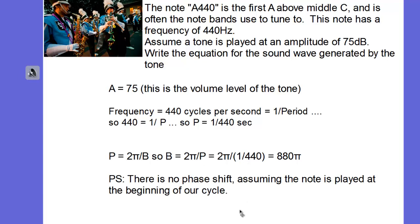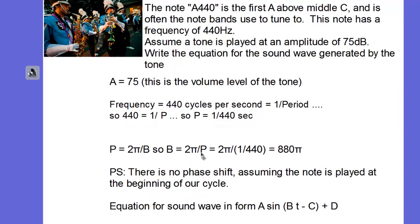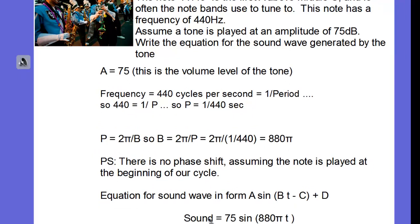Now, when you have multiple band members and they're not all playing the exact same note at the exact same time, those waves can start to add to each other and cancel each other out. And that's when we get sounds that are not pleasing to our ear. So in the end, the equation for the sound wave in the form A sin(Bt - C) + D is equal to 75, the amplitude, times sine 880πT, which is the period.